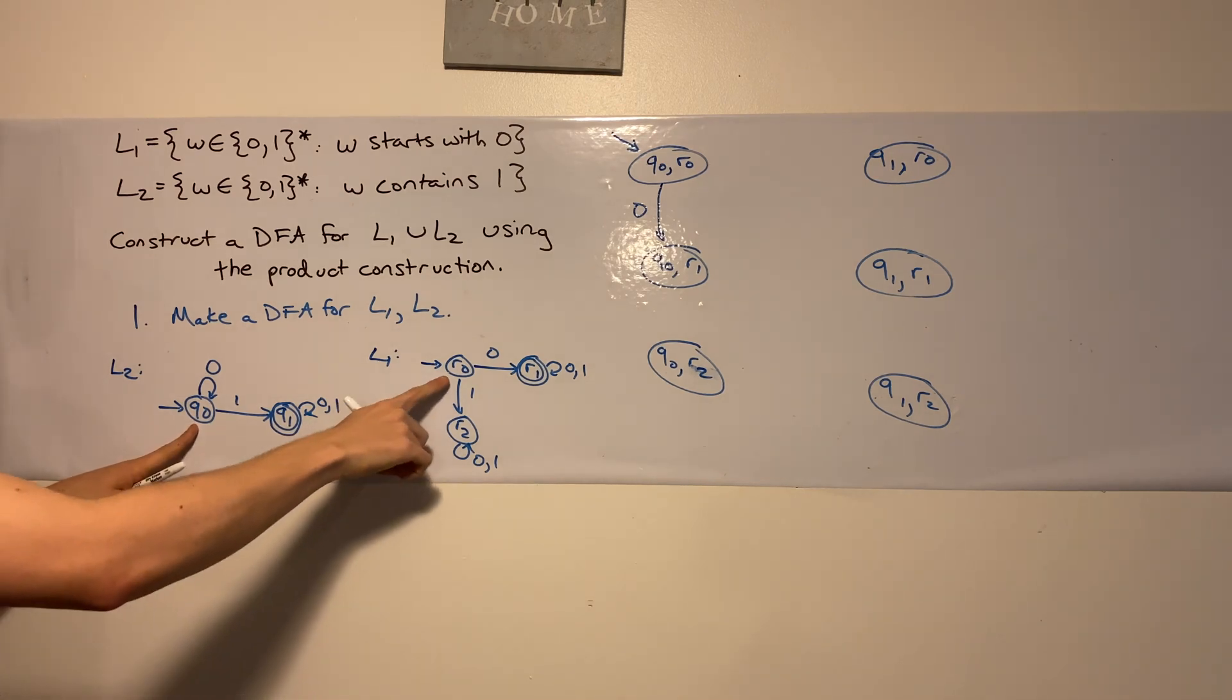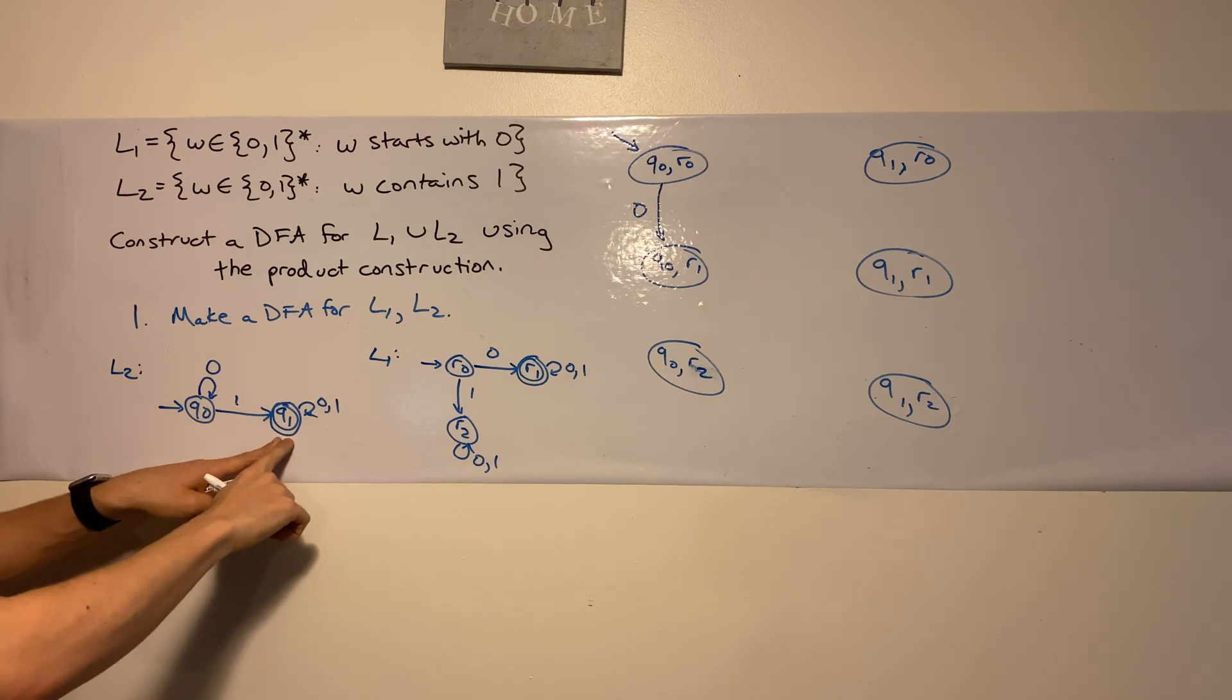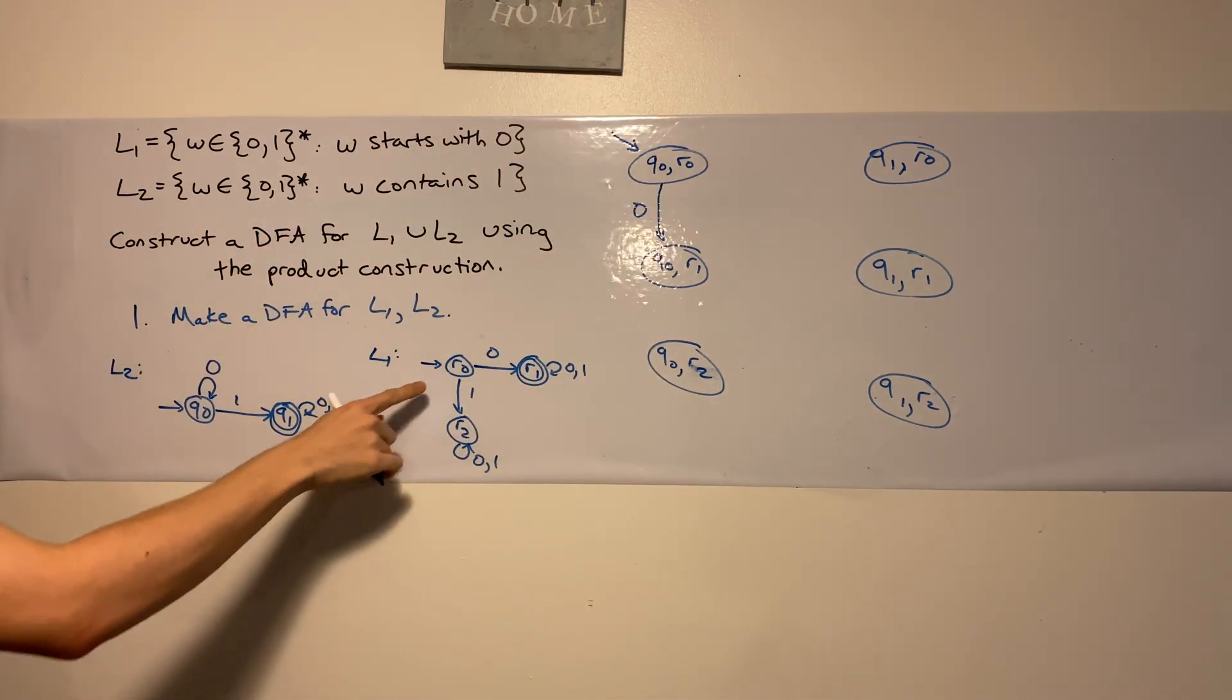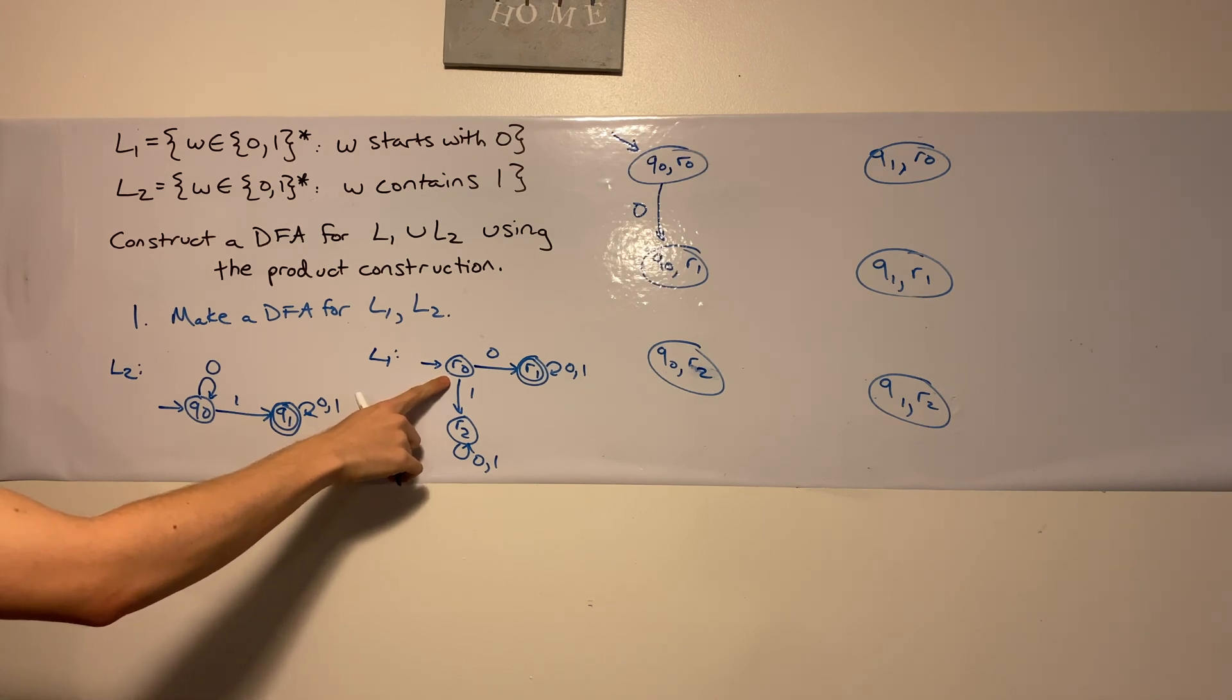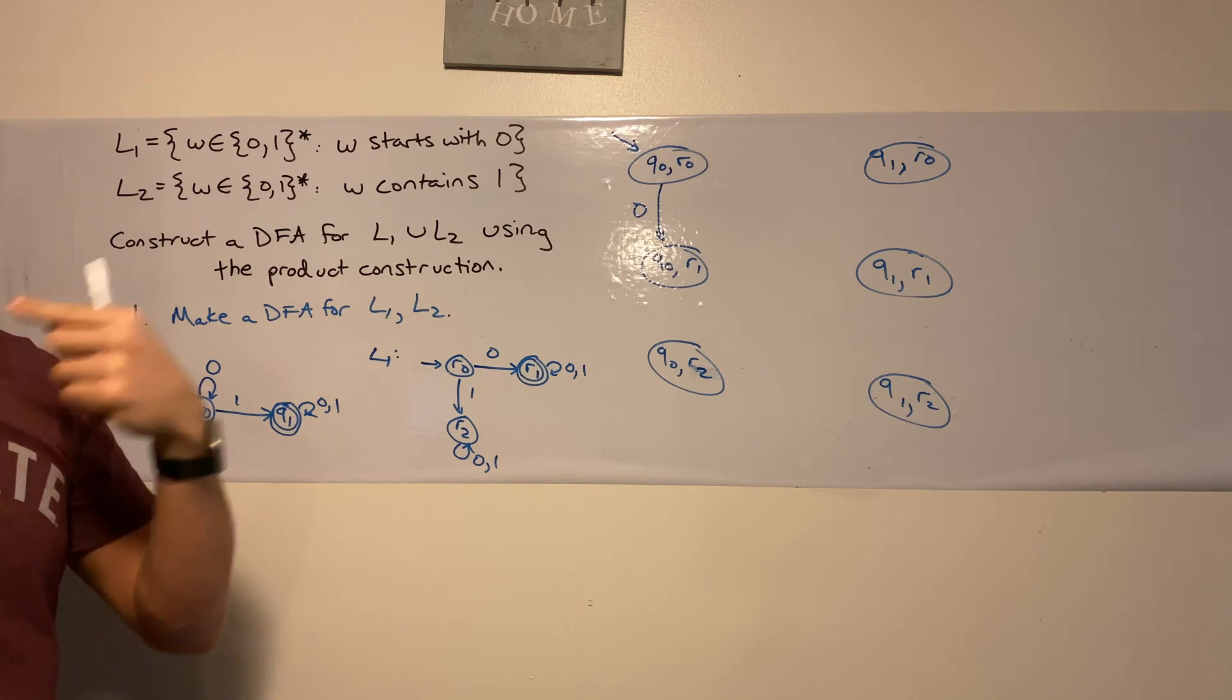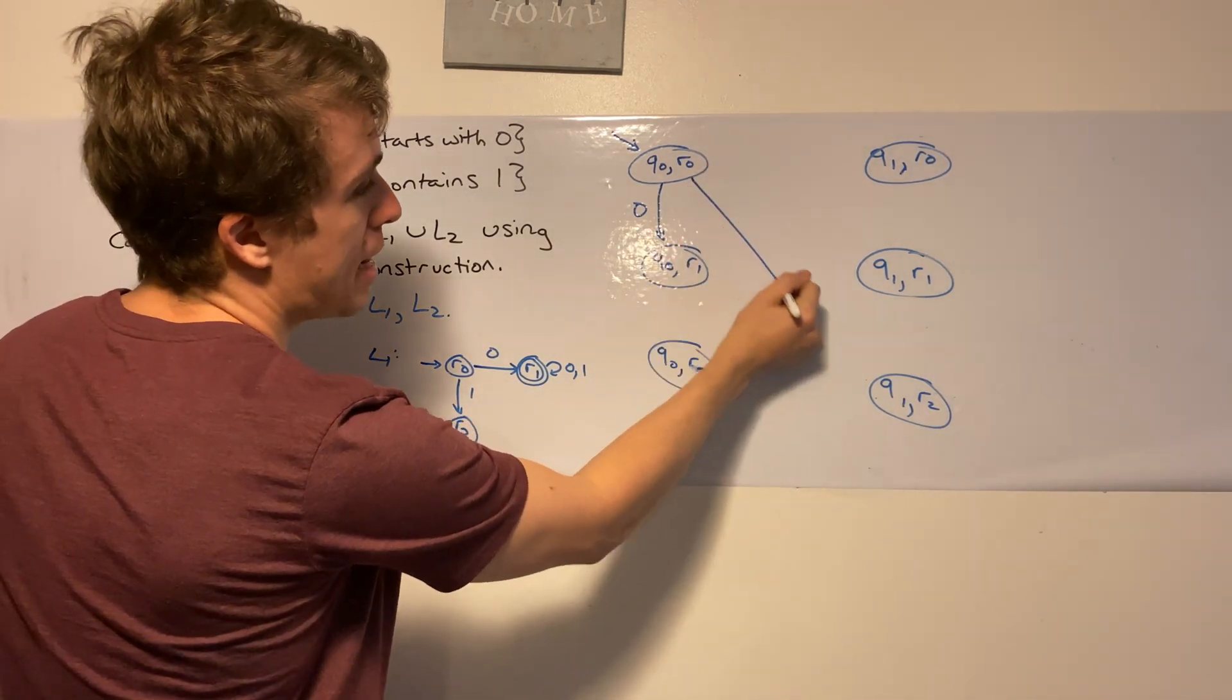Now let's do one from the same state. One from the q machine goes to q1. So I'm thinking q1, so the right column. r0 on one, that goes to r2. So I'm thinking q1, r2, which is this bottom state way down here.